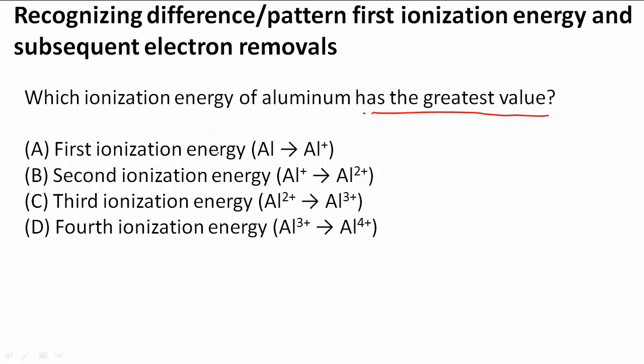The first ionization energy is when we go from Al to Al+. The second ionization energy is when I take Al+ to Al2+, taking two valence electrons. Third ionization energy, going from 2+ to 3+, means taking three valence electrons. And fourth, meaning taking four valence electrons.